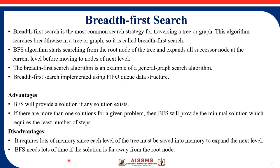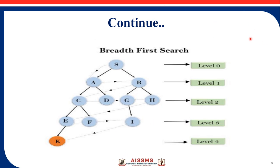BFS needs a lot of time if the solution is far away from the root node, making it complex. In the example graph tree structure shown, we have nodes S, A, B, C, D, G, H, E, F, I, and K. S is the start node and K is the goal node. S is at level 0; A and B at level 1; C, D, G, H at level 2; A, F, I at level 3; and K at level 4.